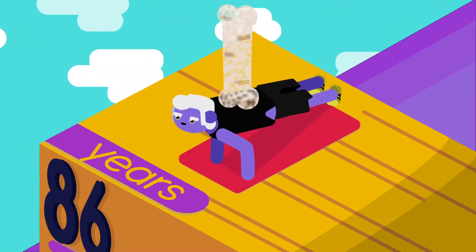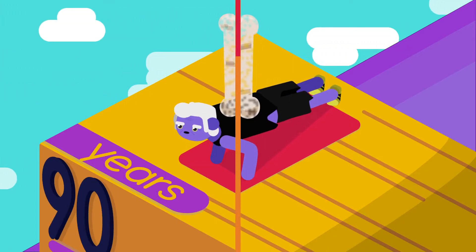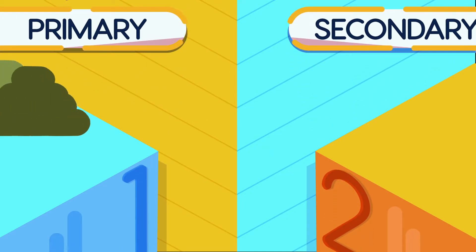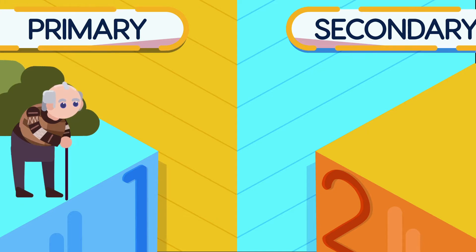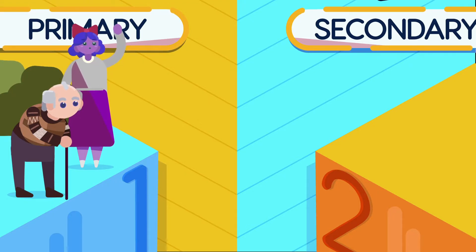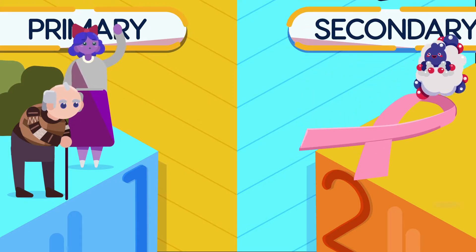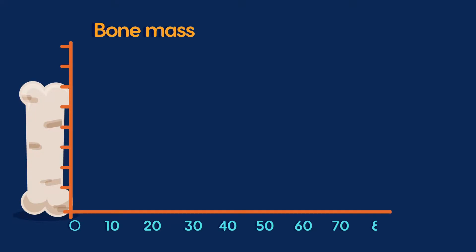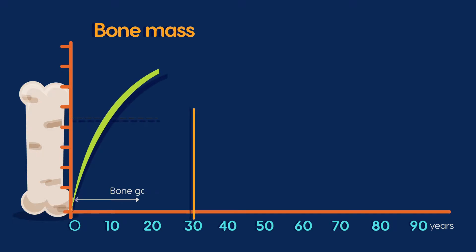There are two types of osteoporosis: primary osteoporosis and secondary osteoporosis. Primary osteoporosis is associated with advanced age and low estrogen levels in women. Secondary osteoporosis occurs at any age and is associated with cancer, hormonal problems, or the use of certain medications.